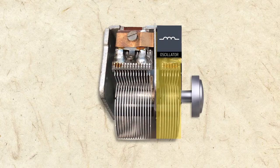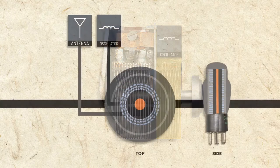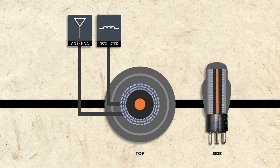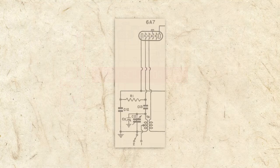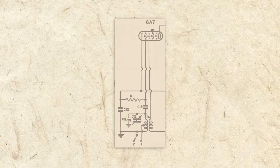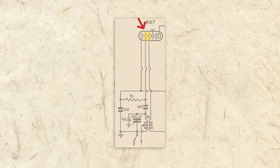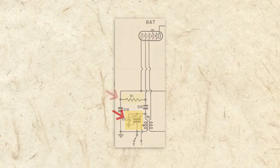We've learned that the oscillator is tuned by the variable condenser and is added to the radio signal in the converter tube. Now let's learn a little bit about how that signal is actually created. Looking at a close-up of our schematic, we see that the oscillator circuit is comprised of the converter tube cathode, grids 1 and 2, the oscillator transformer, one section of the variable condenser, a resistor, and two capacitors.